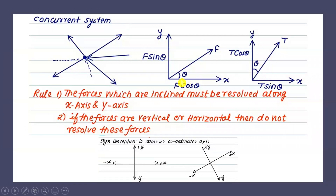If a force F is inclined at an angle theta with the horizontal, the horizontal component is F cos theta and the vertical component is F sin theta. If instead a force T is inclined with angle given with respect to the Y axis, then the Y component is T cos theta and the horizontal component is T sin theta. Always remember: if theta is given with respect to X, the X component is F cos theta; if theta is given with respect to Y, the Y component is cos theta.